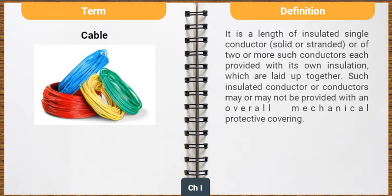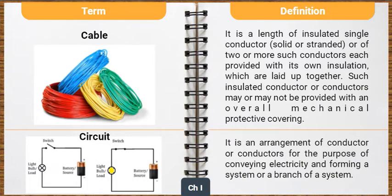Cable is a length of insulated single conductor, solid or stranded, or of two or more such conductors, each provided with its own insulation, which are laid up together. Such insulated conductor or conductors may or may not be provided with an overall mechanical protective covering. Circuit is an arrangement of conductor or conductors for the purpose of conveying electricity and forming a system or a branch of a system.